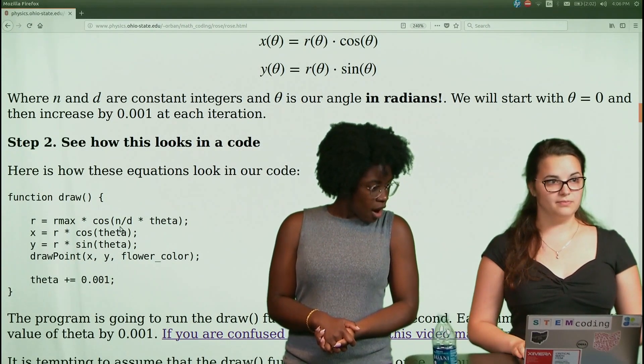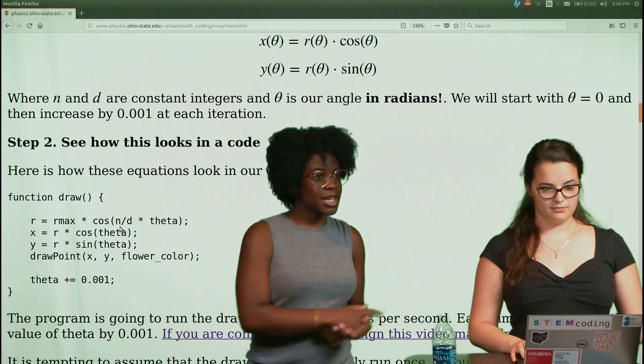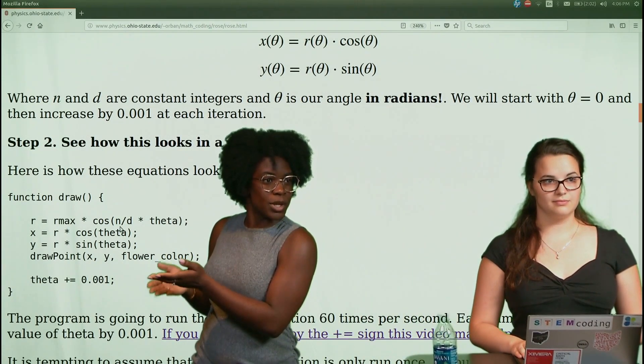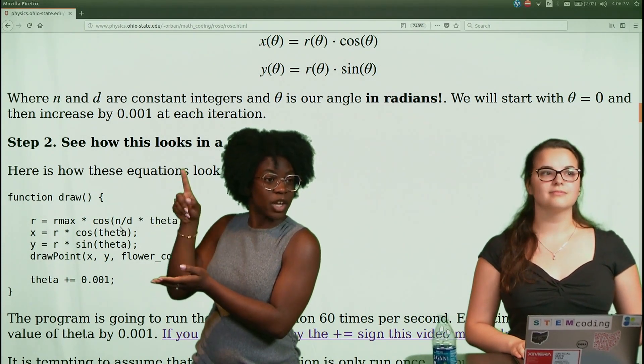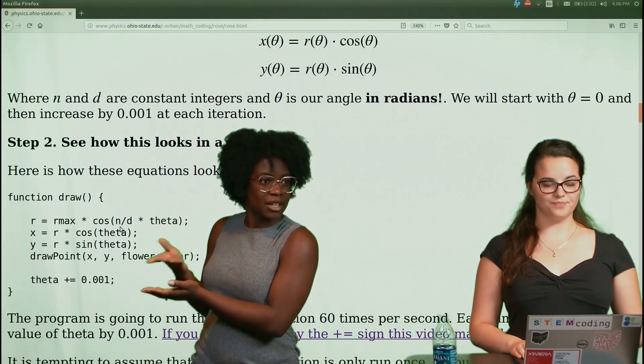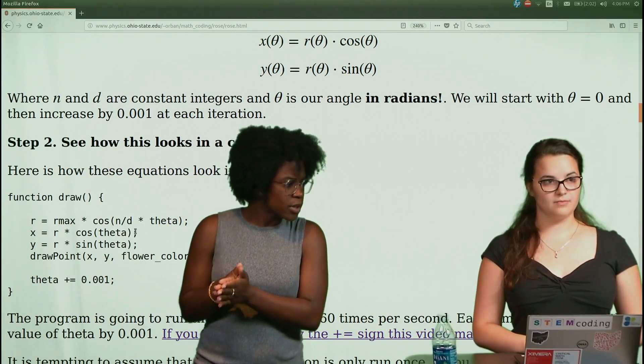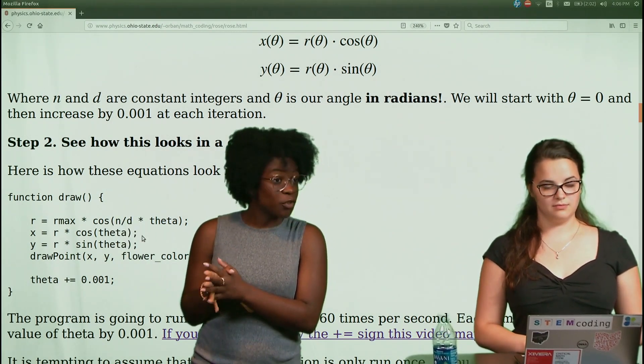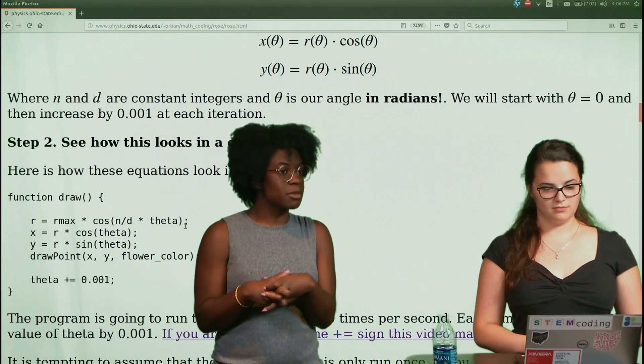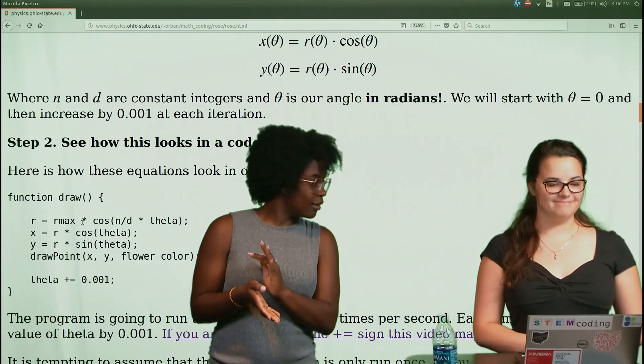So for our first step, as we see here, step two is basically just translating the equations that we set up there and making them into a computer form. So the first one says R equals R max times cosine N over D times theta and that's going to be our variable R of theta.